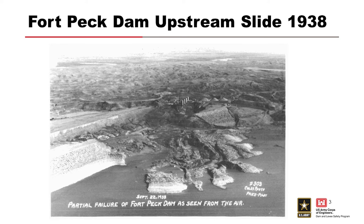If you're thinking about what a topo map looks like, there were about 180 workers working on it while it was under construction, including the construction engineer who was on the embankment at the time — all were able to escape without harm. It was a pretty dramatic slope stability failure.